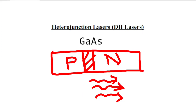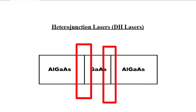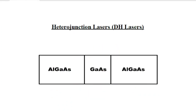Almost all semiconductor lasers available nowadays have a double heterostructure. In a double heterostructure, a thin layer of a suitable semiconductor is sandwiched between two layers of higher bandgap materials, forming two heterojunctions. The wide bandgap semiconductor commonly used is aluminum gallium arsenide (AlGaAs), while gallium arsenide (GaAs) is the narrow bandgap semiconductor. Hence it is called a double heterostructure.